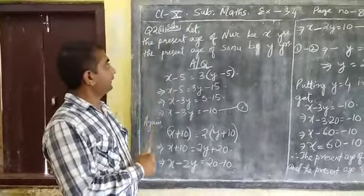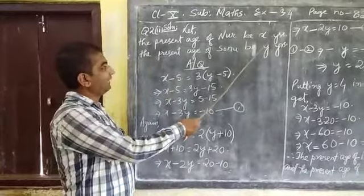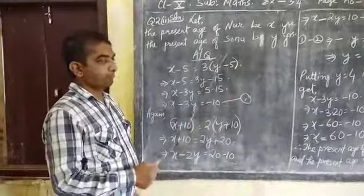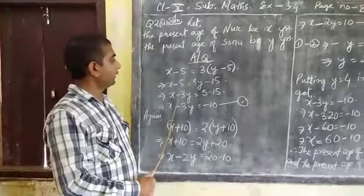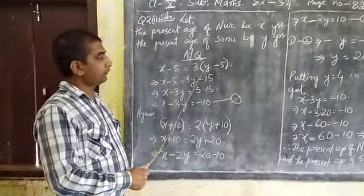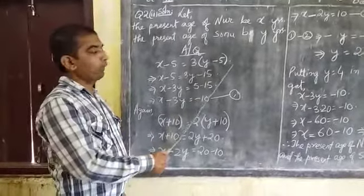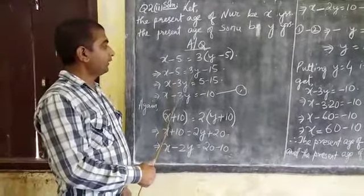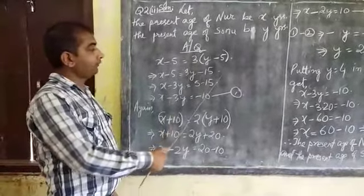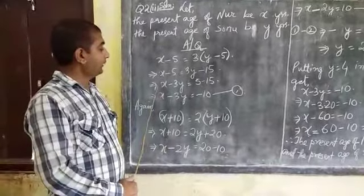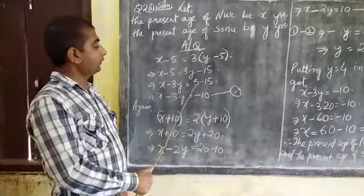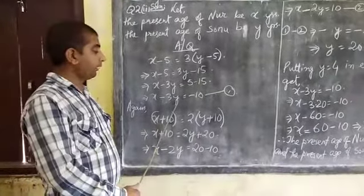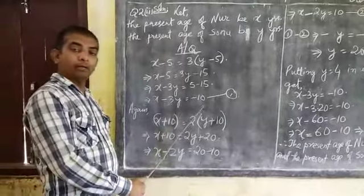Let the present age of Nour be x years and the present age of Tonou be y years. According to the question, x minus 5 is equal to 3 into y minus 5, implies x minus 5 is equal to 3y minus 15. Implies x minus 3y is equal to 5 minus 15, implies x minus 3y is equal to minus 10, equation number 1.